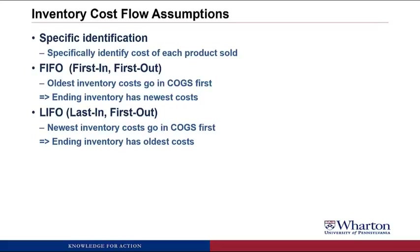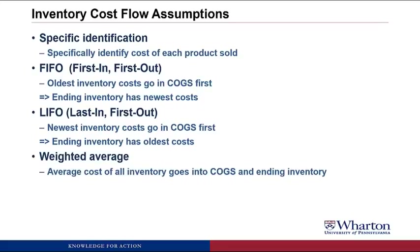The last method you could use is called Weighted Average, where you take an average cost of all inventory acquired and use that for both COGS and ending inventory. In practice, Weighted Average ends up giving results that look a lot like FIFO. So for the rest of the video, I'm not going to talk about Weighted Average, but instead focus on the comparison between FIFO and LIFO.